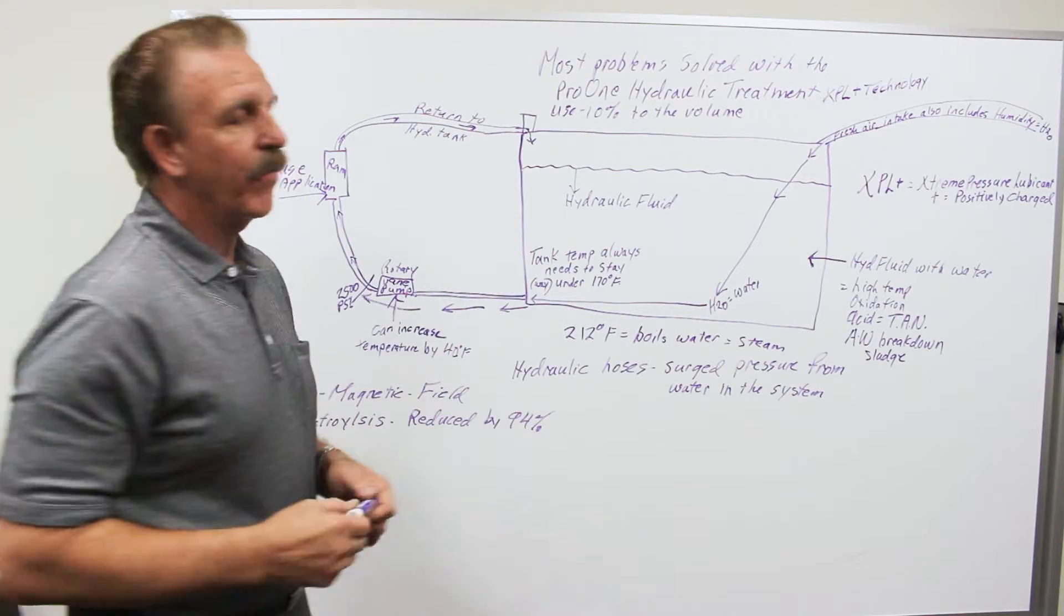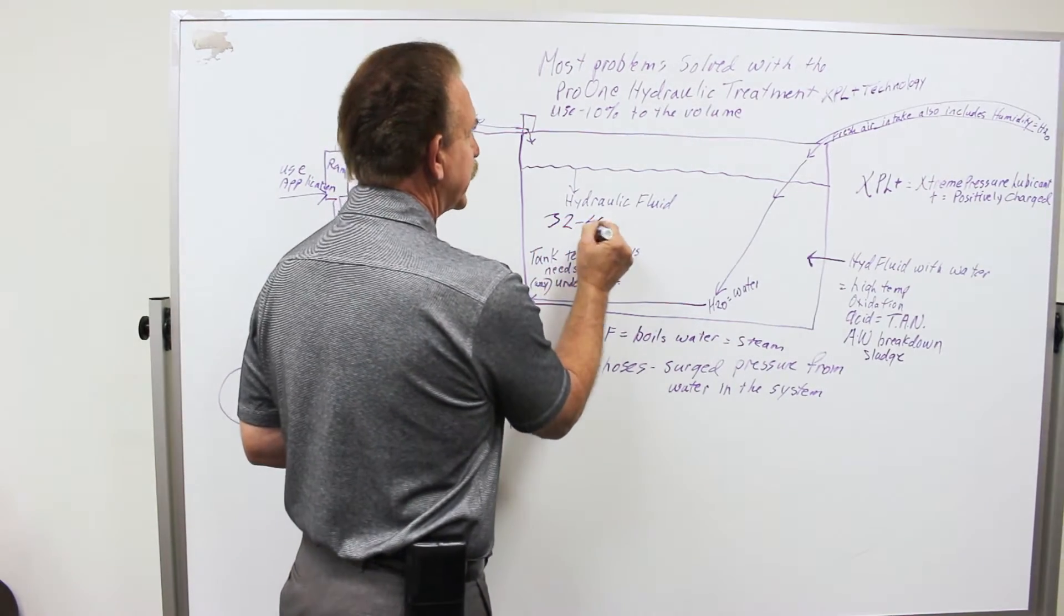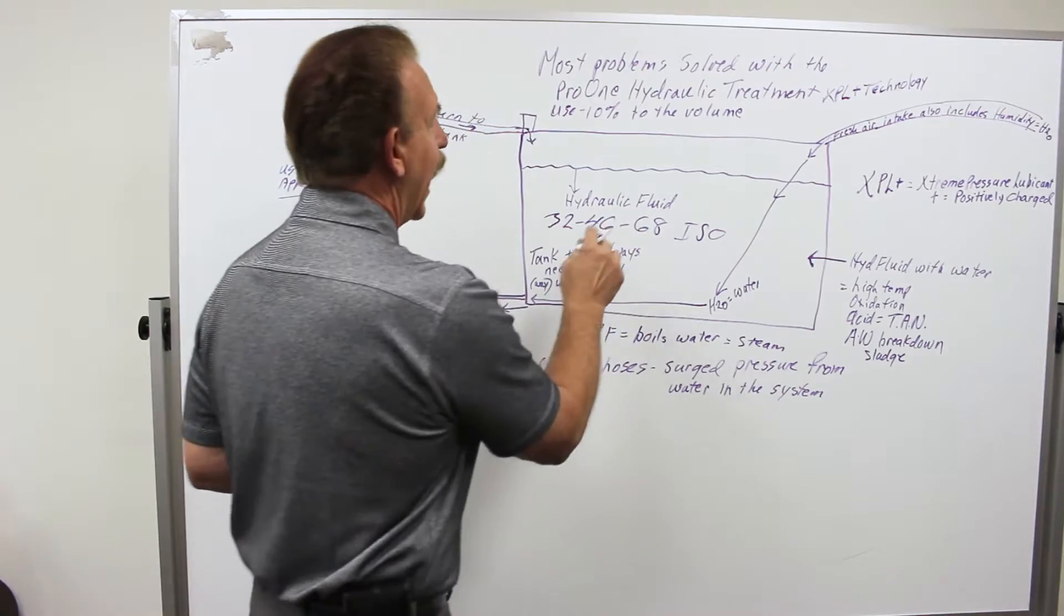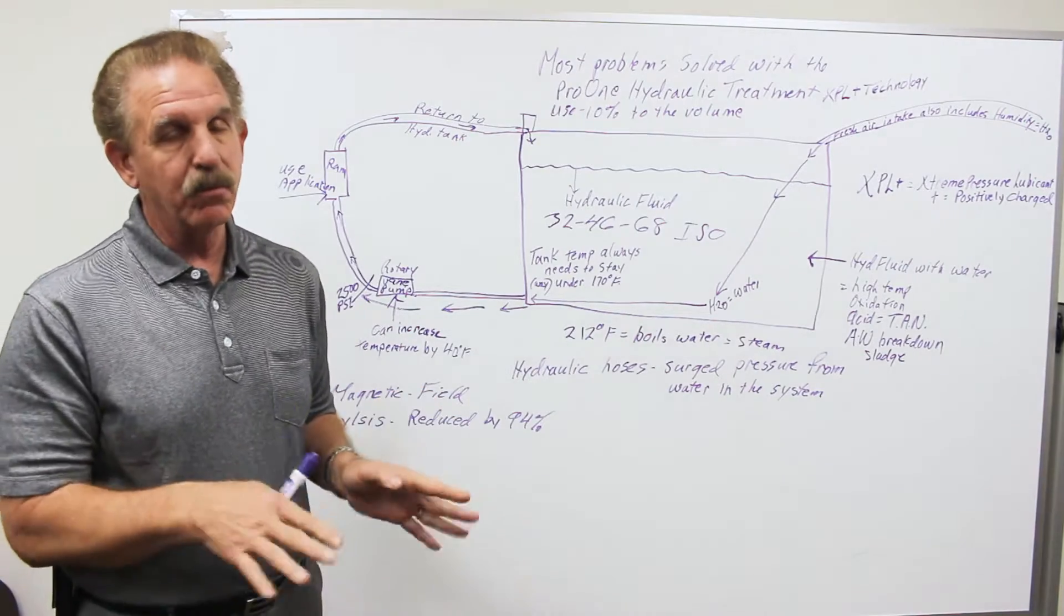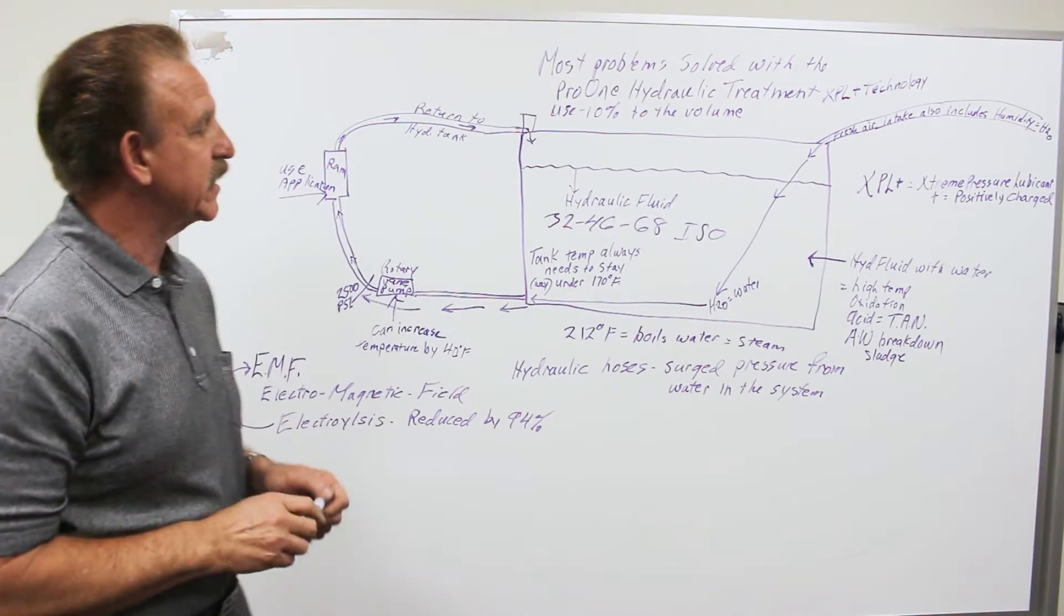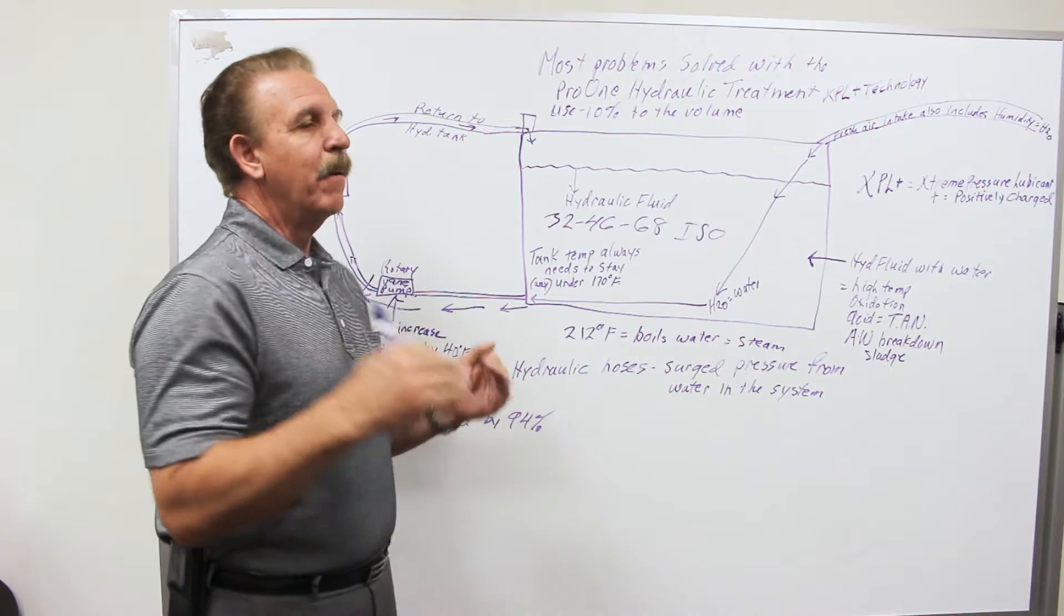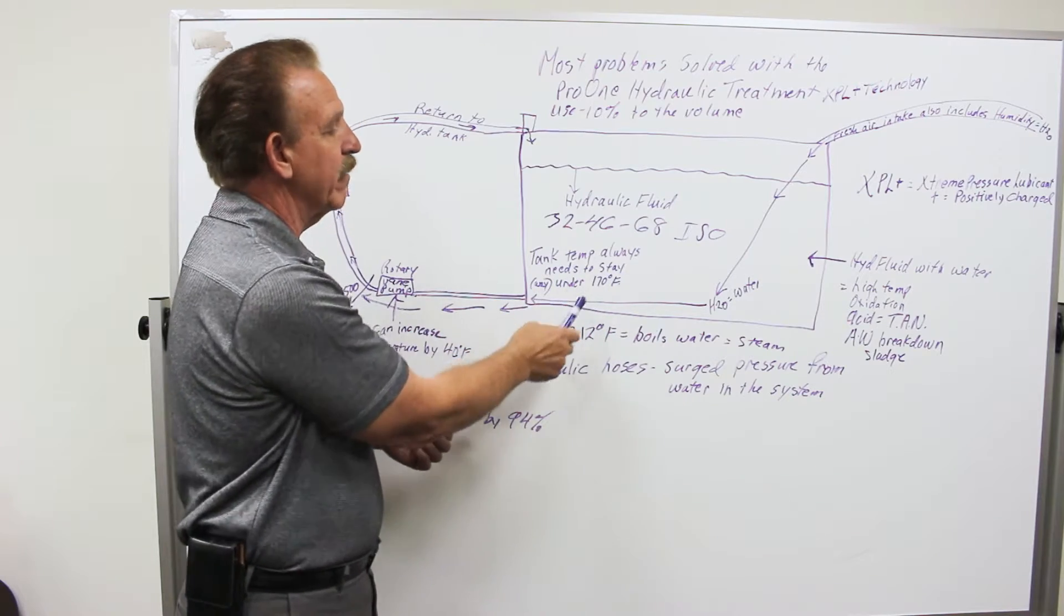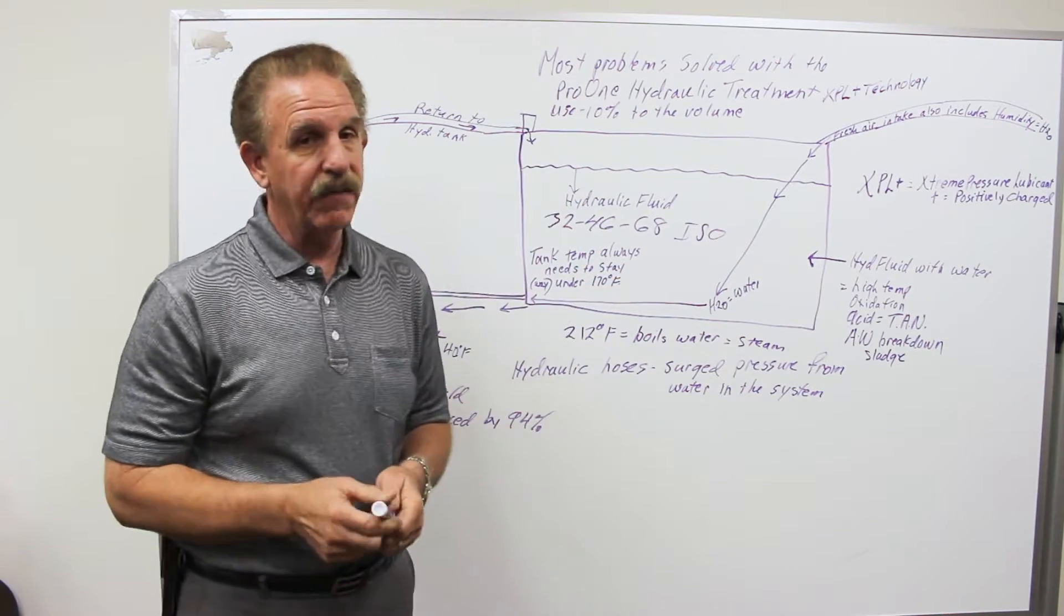The hydraulic fluid ISO can start anywhere from a 32 to a 46 to a 68 ISO. If you get into a 100 ISO system, that means more than likely you have some problems, likely heating. These are your general ISOs - that's the weight of the oil, the thickness of the oil. What we will tell you right off the bat is that it would be very beneficial to keep the tank temperature always way under, if you can, a hundred and seventy degrees. You want to do everything to keep it down below that.